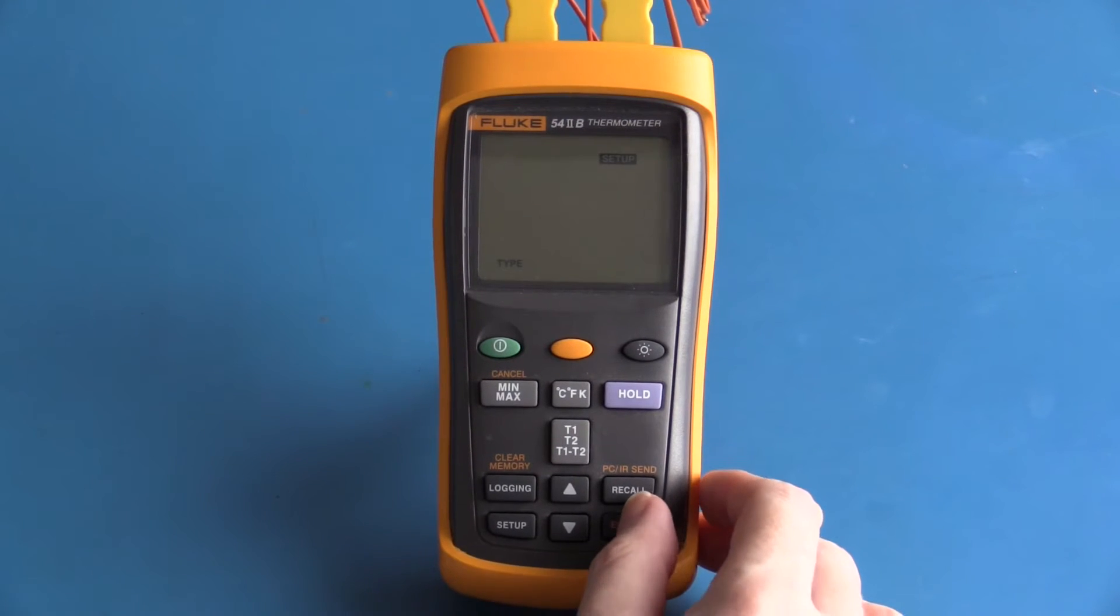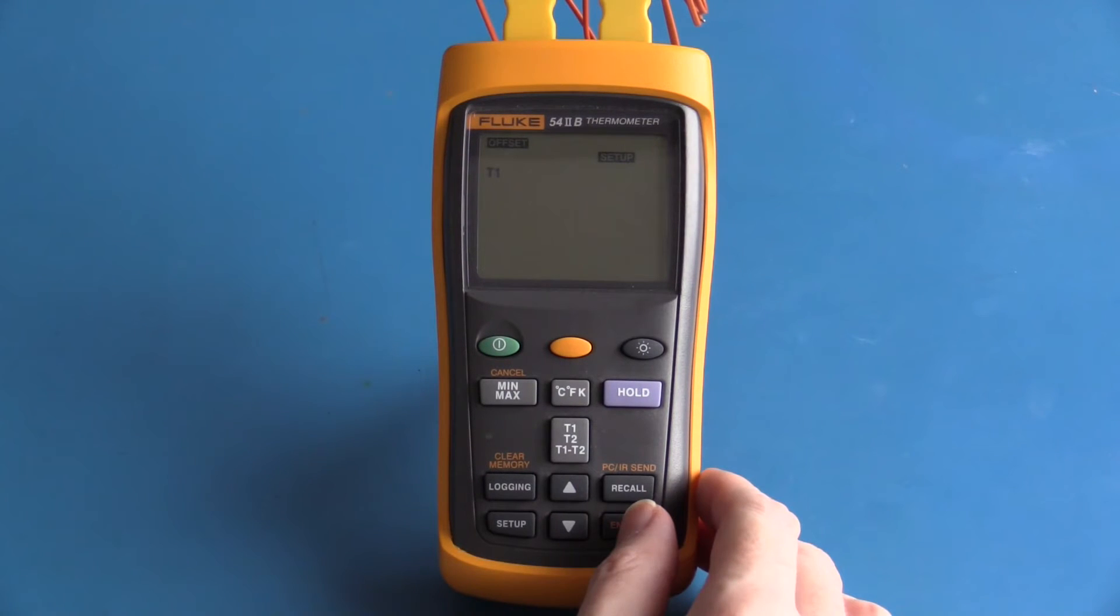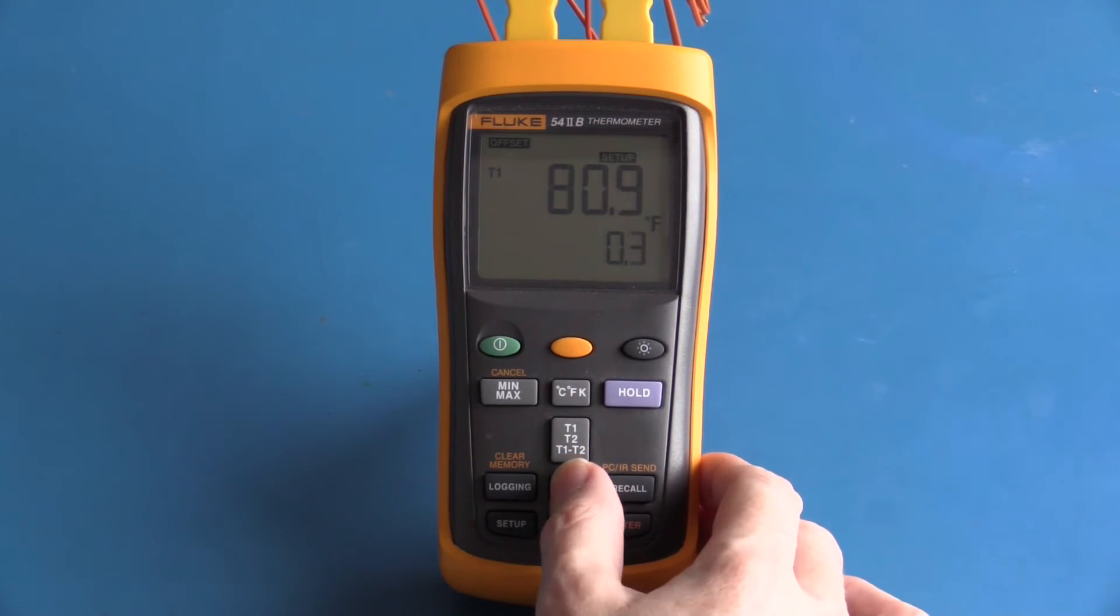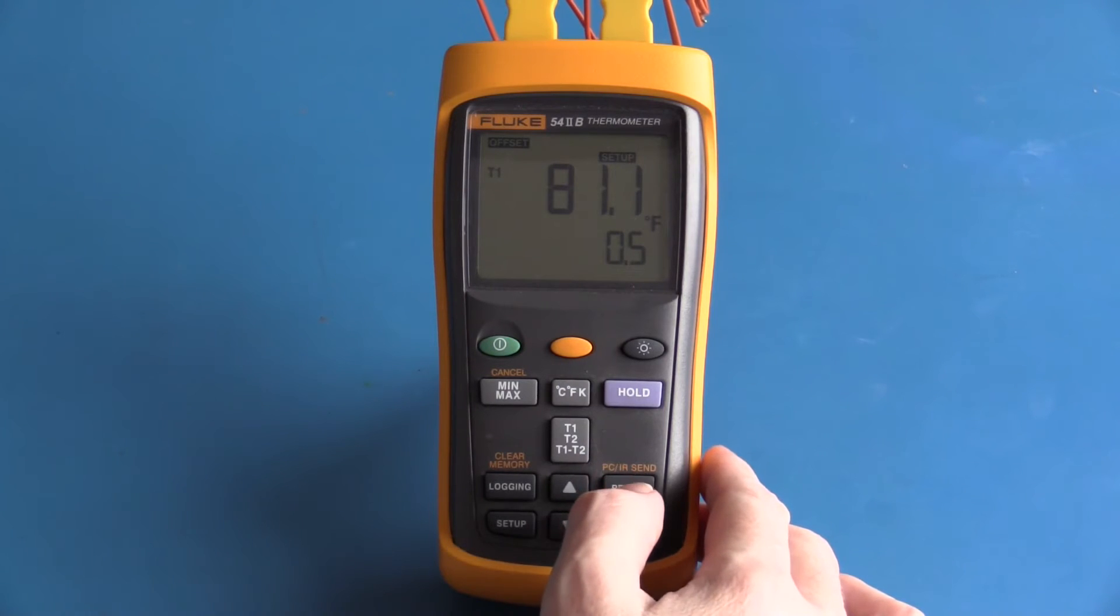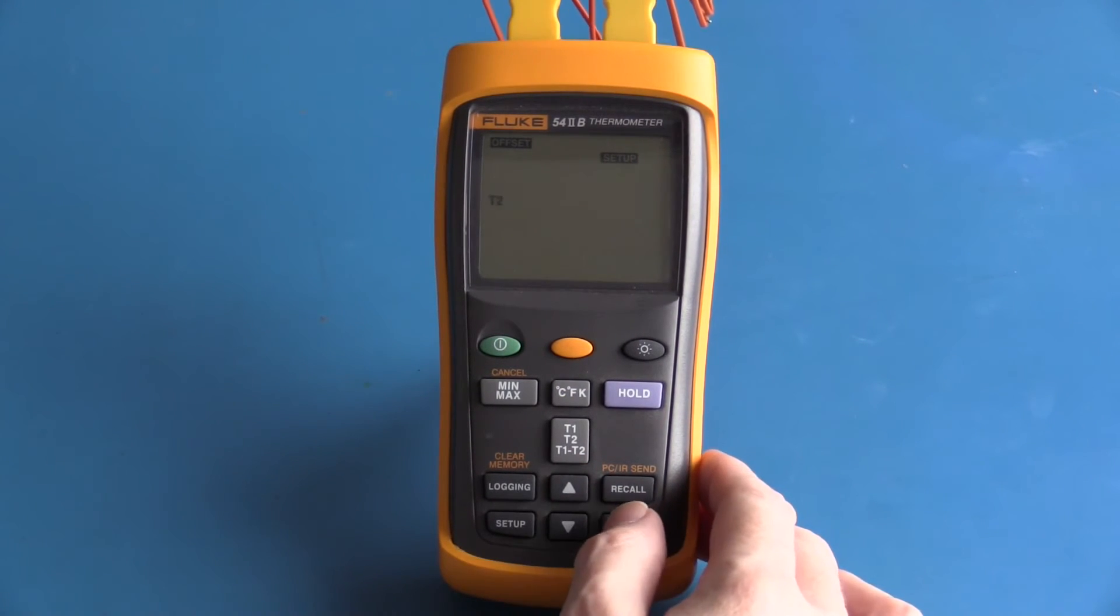The type tells the thermal meter what type of thermal couple we are using. Our options are K, J, T, E, R, S, or N. I only have K type thermal couples. Each channel can have a fixed offset which is applied to the reading. So for example, if I wanted to I could set a half a degree Fahrenheit offset for T1. I don't wish to set an offset. Likewise an offset can also be set for T2.